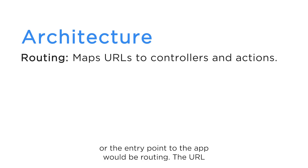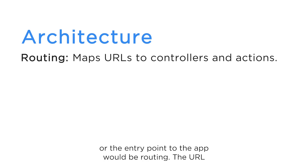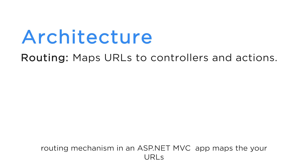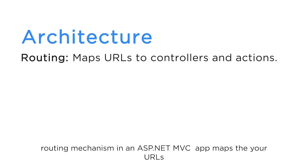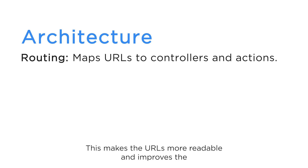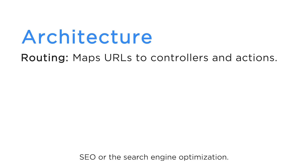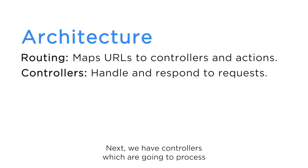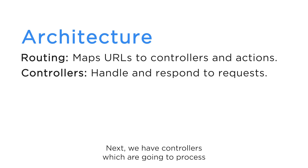The first and main entry point of the app is routing. The URL routing mechanism in ASP.NET MVC maps URLs directly to a specific controller and then to actions within that controller. This makes the URLs more readable and improves SEO, or search engine optimization.